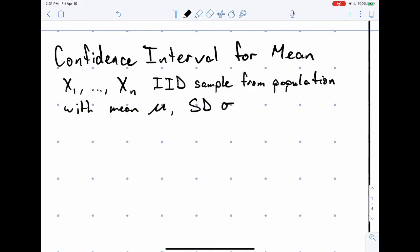In this video we'll show you the procedure to find a confidence interval for the mean for a large sample. So you take n observations X1, X2, X3, all the way up to Xn, independent and identically distributed samples from some population.